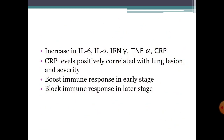Increases in interleukin-6, interleukin-2, gamma interferons, tumor necrosis factor alpha, and CRP are observed. CRP levels are positively correlated with lung lesion and severity. In the early stage, boosting the immune response is advised, and in the later stage, blocking the immune response — because a stronger immune response may not be advantageous for patients who have entered the severe stage of COVID-19.